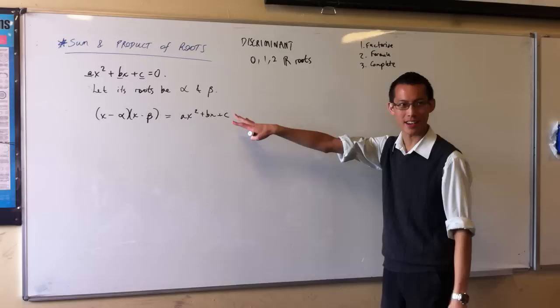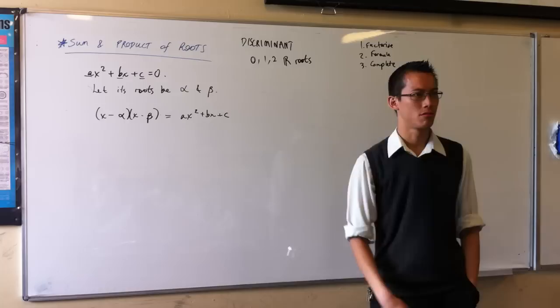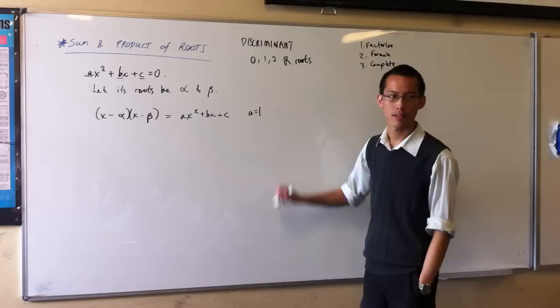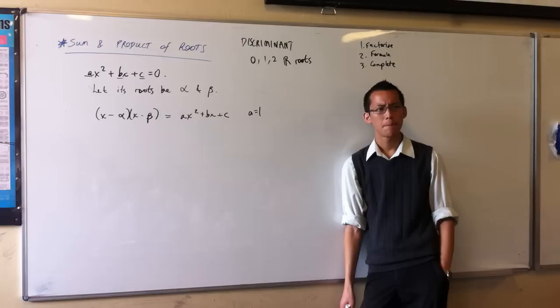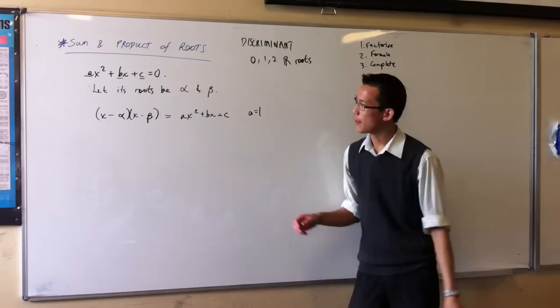Now, I'm almost done here in terms of my setup, but I'm not quite finished because, at least how I look at it, this equation can almost never be true. Almost. This equation can only be true when A is equal to 1. Why? Yeah. Because this one, the coefficient of X, if you open up your brackets, it can be X minus. Good, good, good.